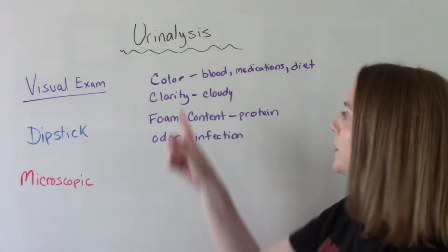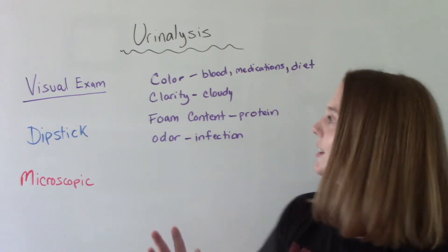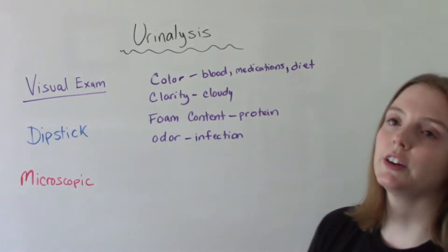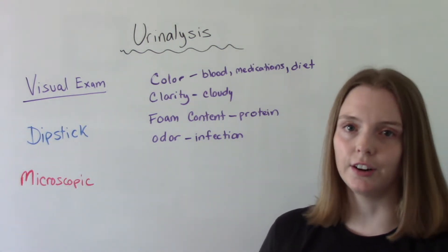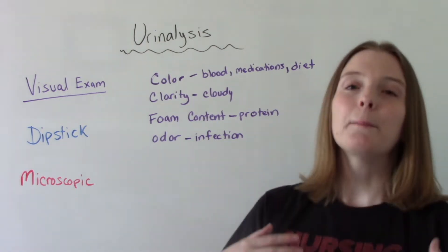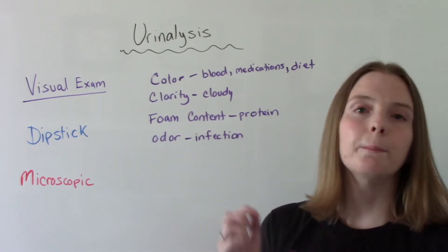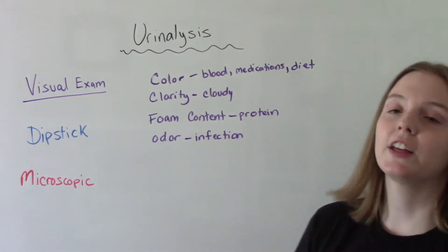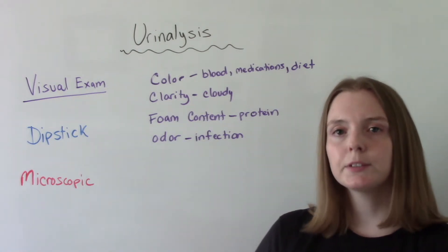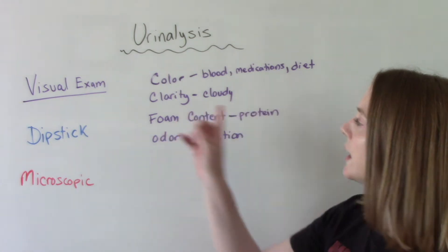Normal urine should be colorless and clear with no foam content and normal to no odor. Some variations can include blood in the urine, which could be an indication that there's a problem with the kidneys. Certain medications or foods in your diet can alter the appearance of your urine — for example, beets can cause your urine to look a little red, which could be mistaken for blood. So we want to make sure we're telling the doctor and nurse about medications and dietary things that could affect our urine. Cloudy urine could indicate a problem like an infection, though sometimes it's okay because skin cells can end up in your urine and make it look a little cloudy.